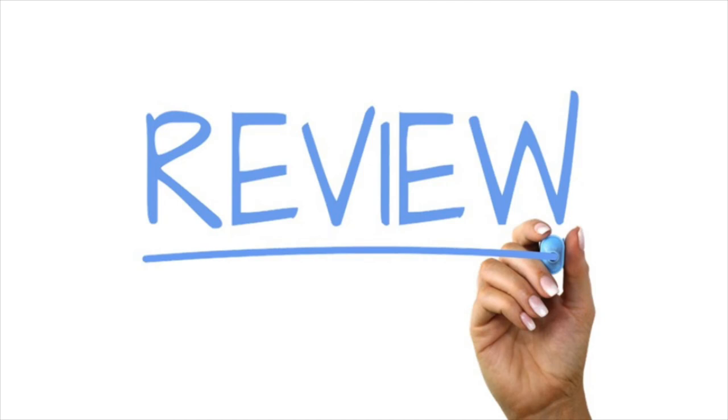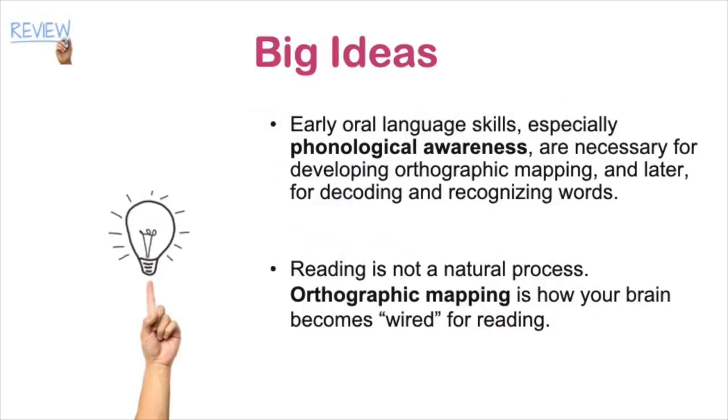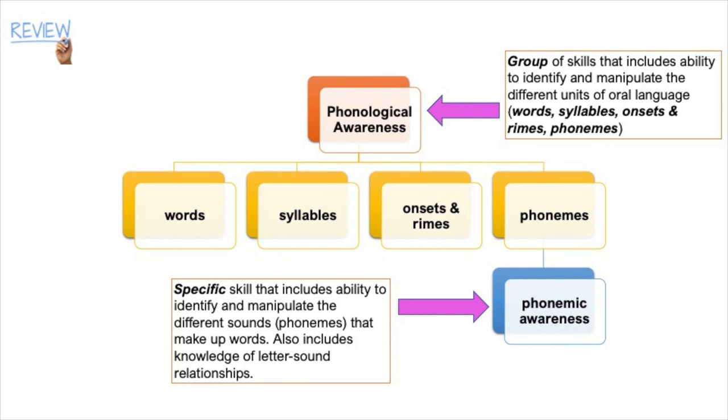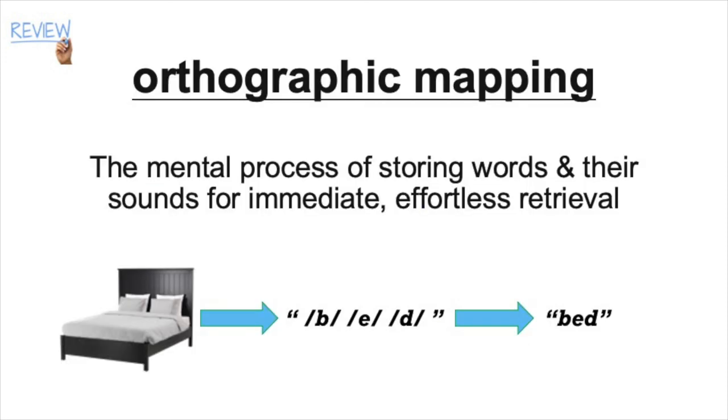We've covered a lot of material in this video, so let's review. The two main ideas from this video were that phonological awareness plays a big role in developing orthographic mapping, and that orthographic mapping is how your brain becomes wired for reading. We defined both phonological awareness and phonemic awareness and pointed out why they are not the same thing. We defined orthographic mapping as the mental process of storing words and their sounds for immediate, effortless retrieval.